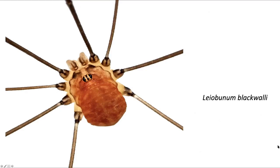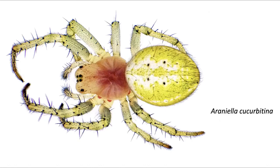If we take a look at a typical harvestman — this is Leiobunum blackwallii, a common harvestman you can find around the countryside — you can see it is typically all one piece, with the legs radiating off from it.